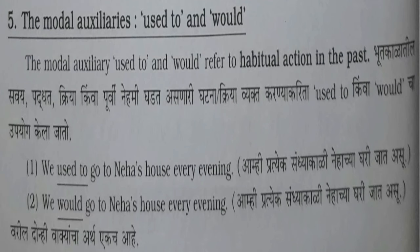One more Modal is Used To and Would. Used To and Would refer to habitual action in the past — that is, actions or events that happened regularly or continuously in the past. Example: 'We used to go to Neha's house every evening.' Second example: 'We would go to Neha's house every evening.' Both sentences mean we went to Neha's house every evening. You can replace 'used to' with 'would' and vice versa.